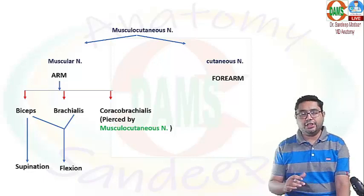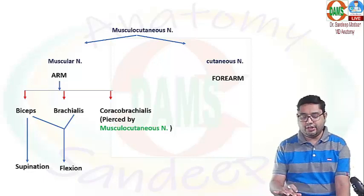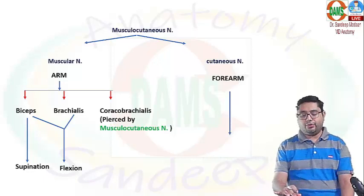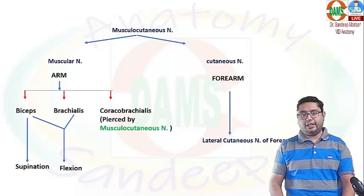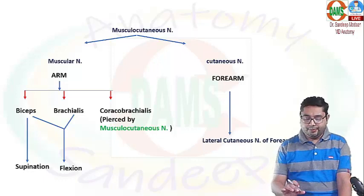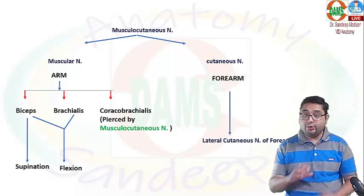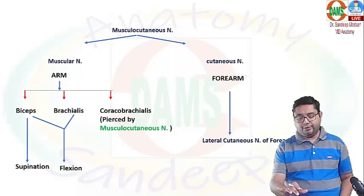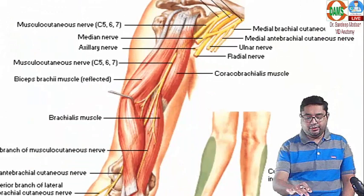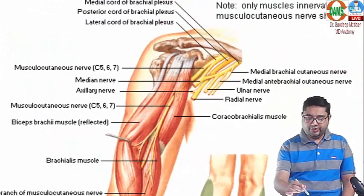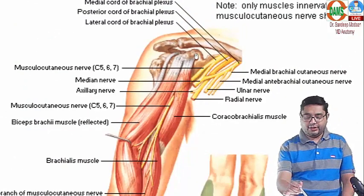Regarding the cutaneous component — after having supplied the muscular part of the arm, the nerve continues as the lateral cutaneous nerve of the forearm.